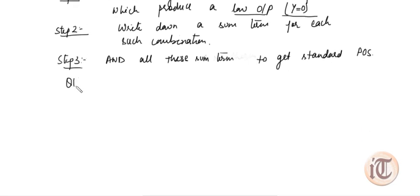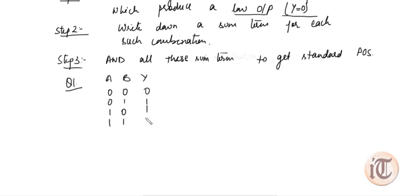Let's take example number one. The given truth table has inputs A, B and output Y. The values are: A=0,B=0; A=0,B=1; A=1,B=0; A=1,B=1 with outputs zero, one, one, zero respectively. For the standard POS expression, step one is to consider only those combinations where y equals zero — that is the first entry and the last entry.